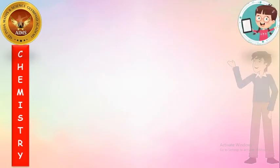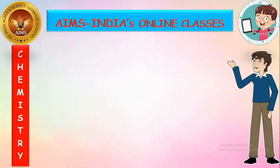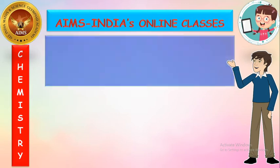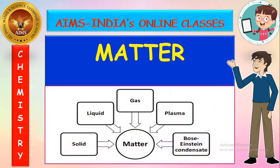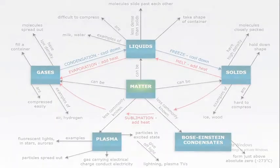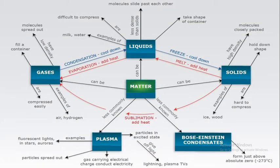Hello students, welcome to AIMS India online classes. This is a chemistry session. In this, we are discussing the chapter 'Matter Around Us.' In this session, we are going to see a practice sheet related to this chapter. So before going to the practice sheet, let us have a glance at the concepts we have learnt from this chapter.